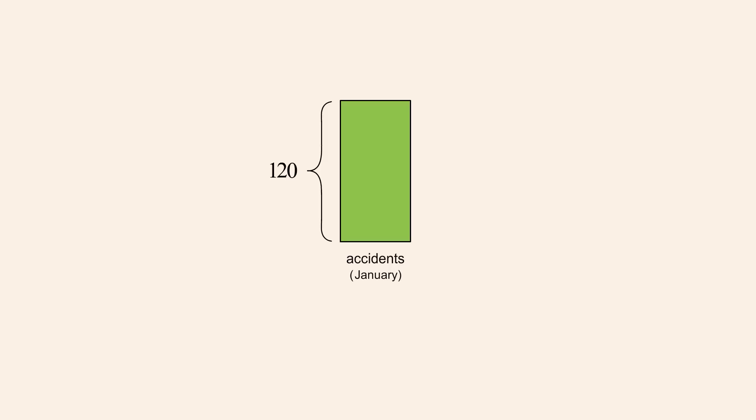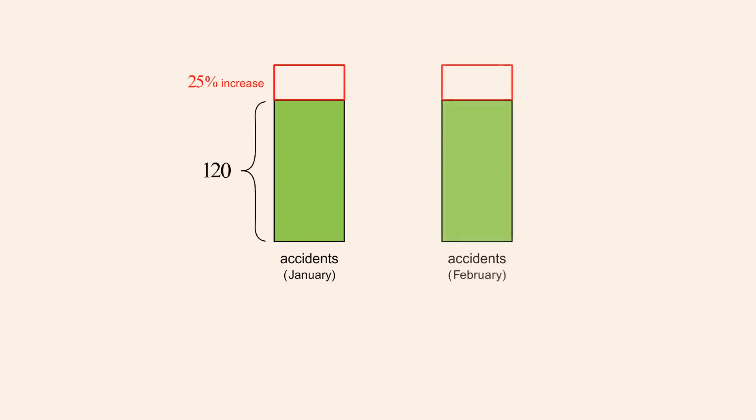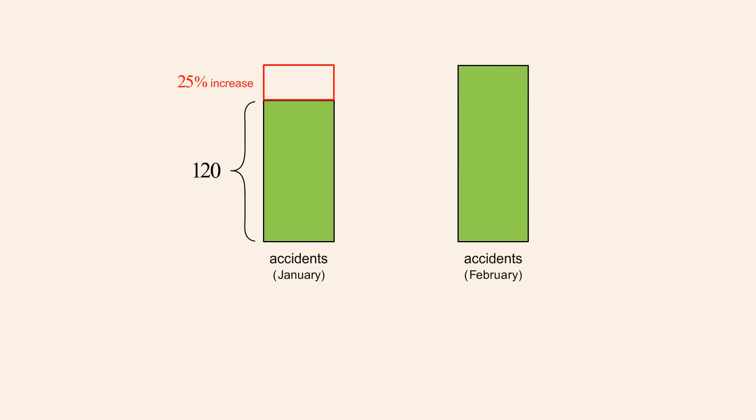If in February, the number of accidents increased by 25%, then how many accidents occurred in February? Let's let x represent the number of accidents in February. The increase in accidents was 25% of the number of accidents in January, or 25% of 120. Since the decimal equivalent of 25% is 0.25, we can write this increase as 0.25 times 120.